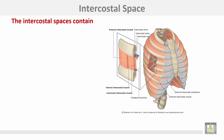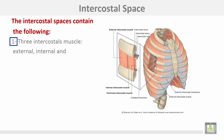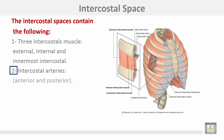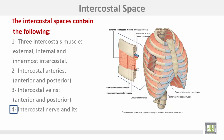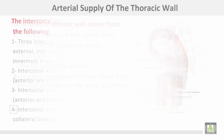The intercostal spaces contain the following: three intercostal muscles — external, internal, and innermost intercostal muscles; intercostal arteries — anterior and posterior; intercostal veins — anterior and posterior; and finally intercostal nerves and their collateral branches.